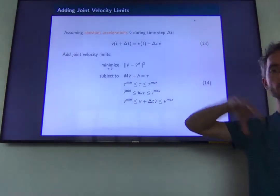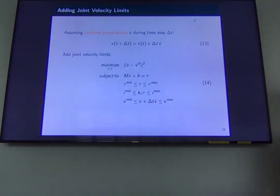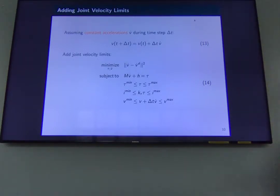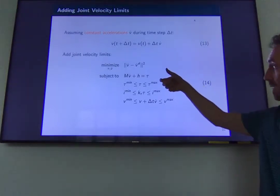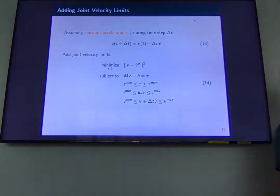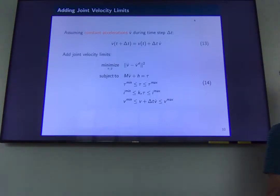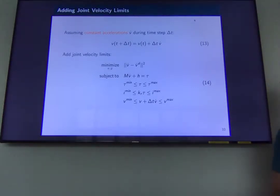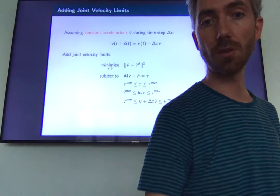Starting from the classic inverse dynamics controller, which is a very old control algorithm, just by rewriting it as a least-square program — which by itself doesn't give us anything more, it's exactly the same controller — we can start adding all these limits. We get immediately a controller that is much more intelligent in a certain way, because it's aware of the limitations of the hardware it's controlling. So we have torque limits, current limits, and joint velocity limits.